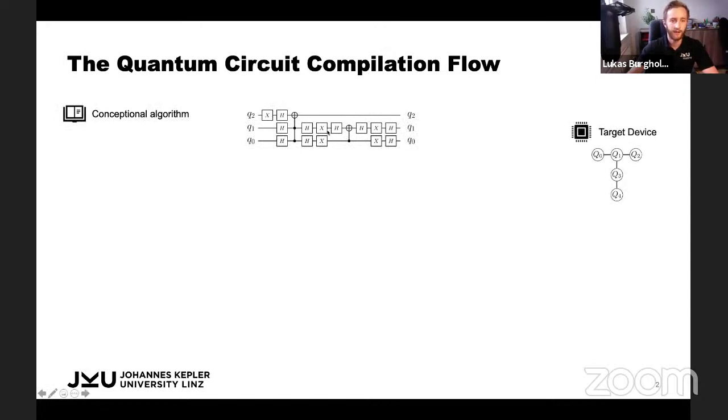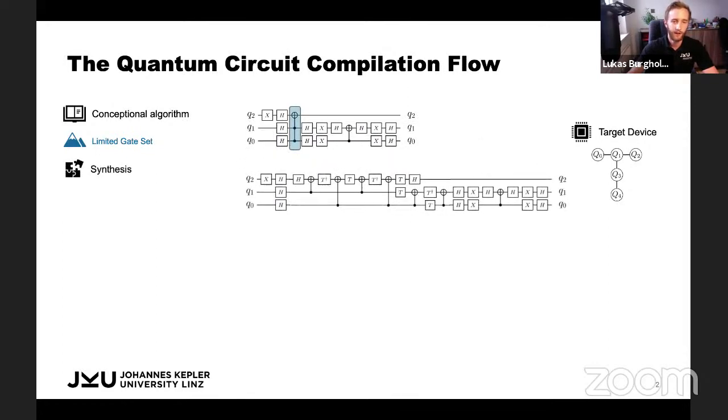What you see here is an instance of Grover Search for three qubits and you see the IBM Q London device coupling map on the right. The first step that's necessary to execute this algorithm on the device is we have very limited gate sets. So the Toffoli gate is not native to the device. We need to decompose it in a step called synthesis, which makes the circuit quite a bit larger.